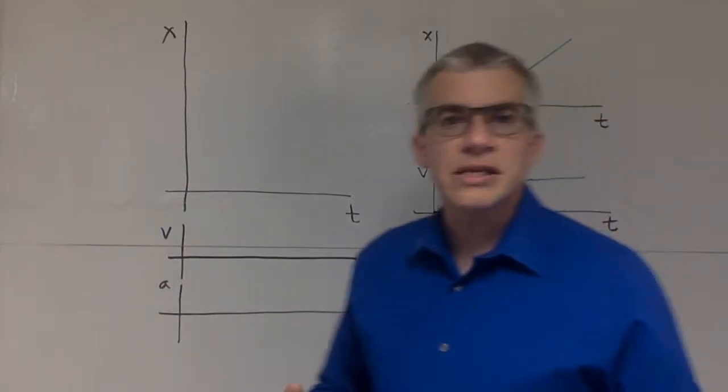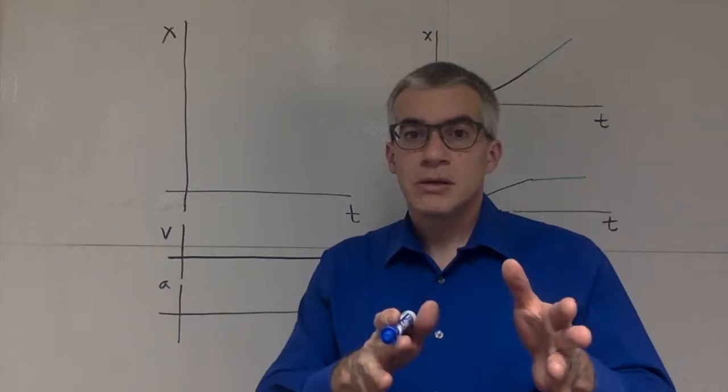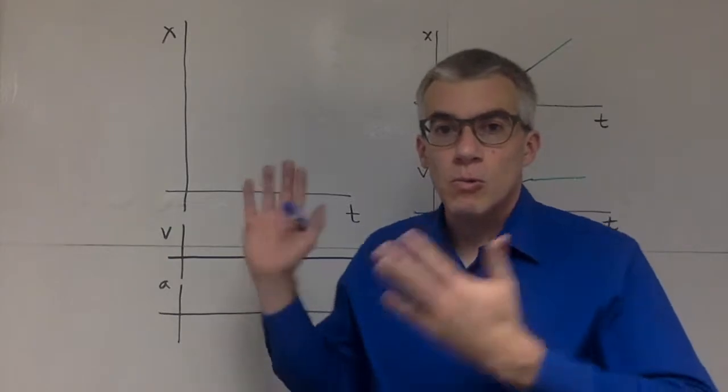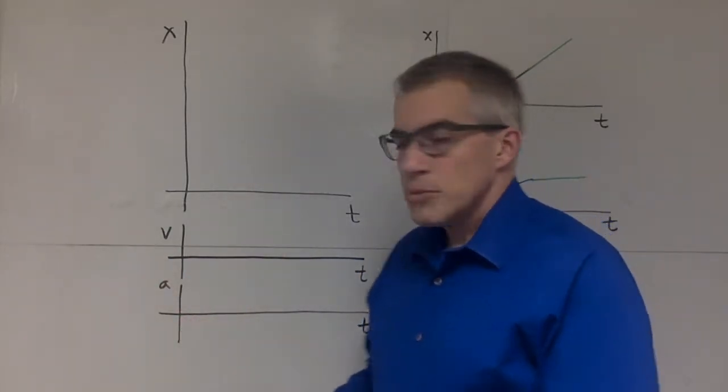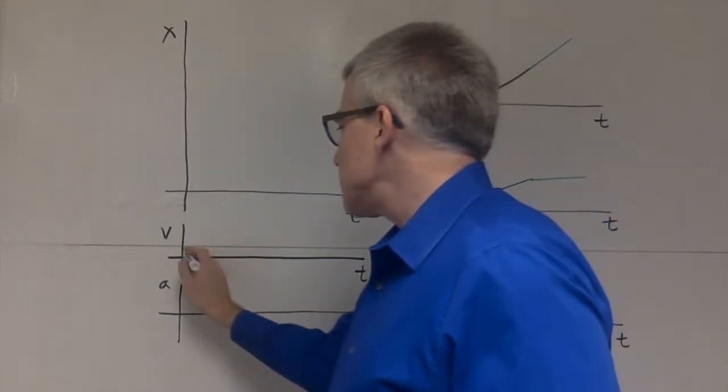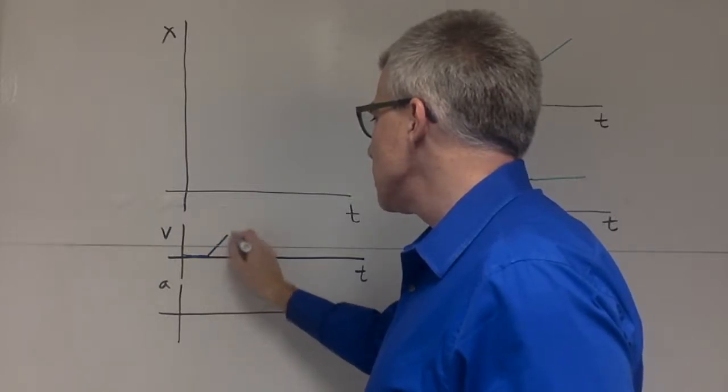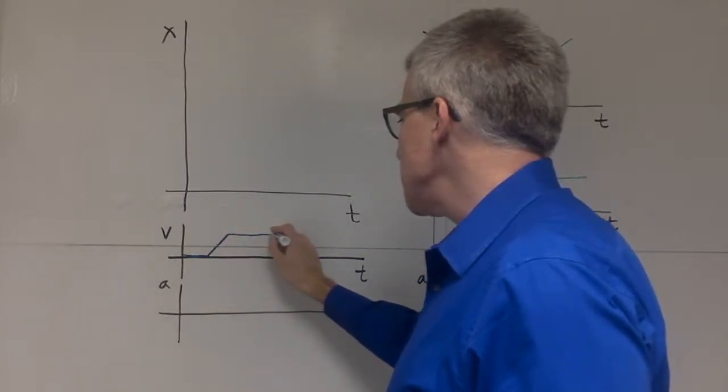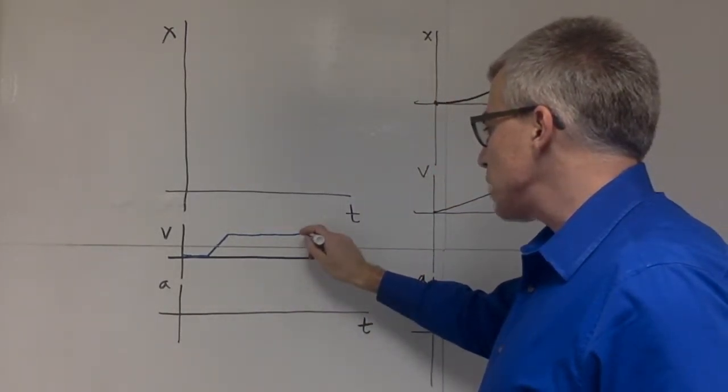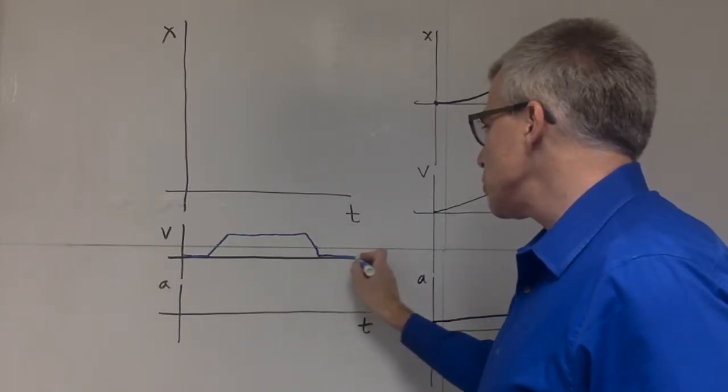Now let's do a classic example. A bus leaves a bus stop, picks up speed, cruises for a while, and then slows down at the next stop and stops. What do these graphs look like? Probably the easiest one to imagine is the velocity. You've got the bus is stopped. Then it pulls away from the curve going faster and faster. Hits its cruising speed. Stays there for a while. Then it's time to slow down to stop at the next stop. So velocity decreases back down to zero and then you're stopped at the stop.